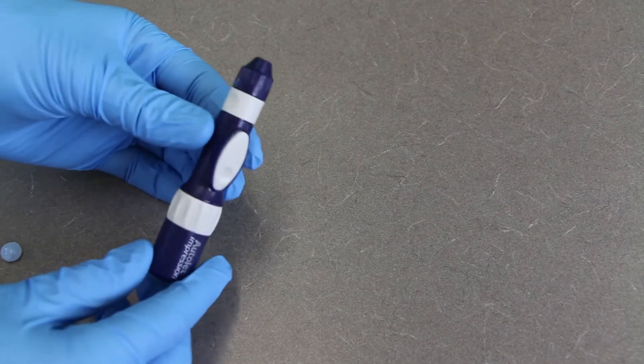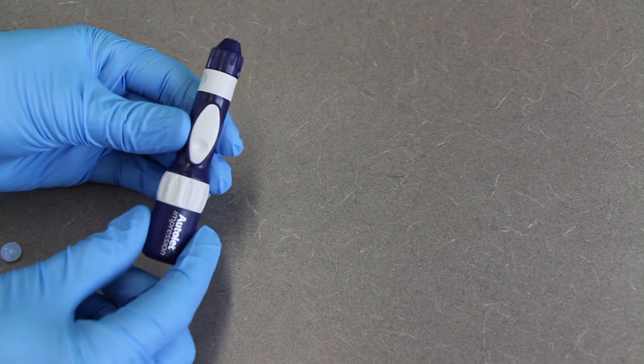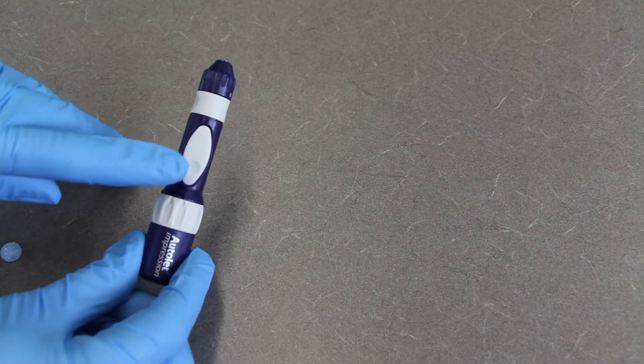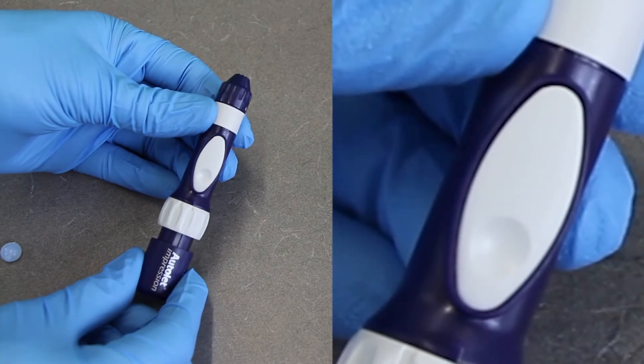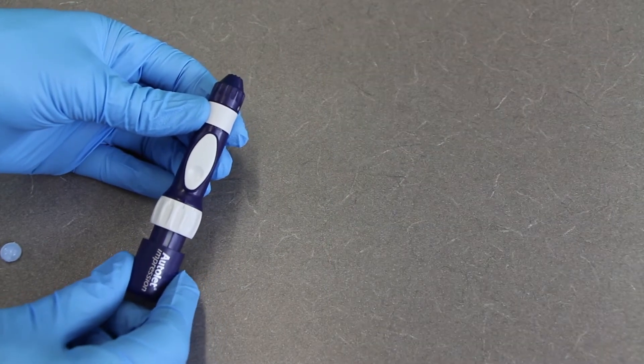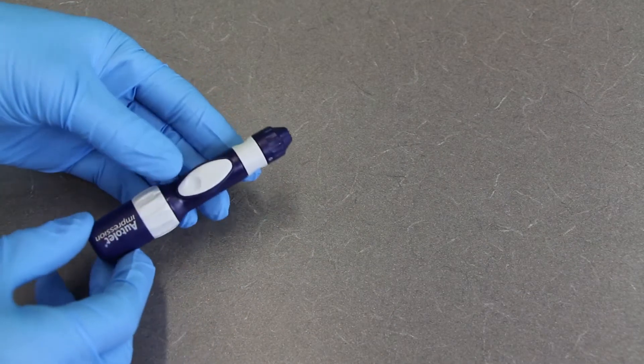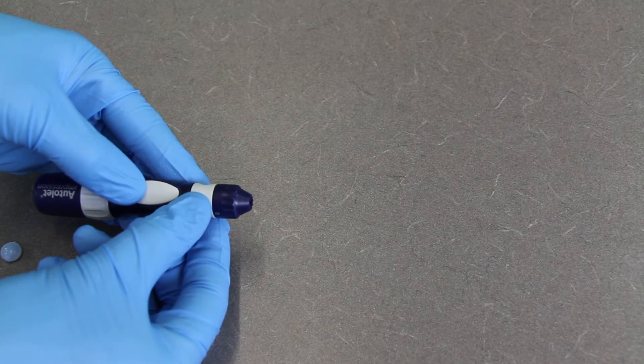In order to load the gun or to ready it, you're just for this version at least just going to grab this back part and pull back until you see this button here kind of pop out towards you. There it was. And then I can let go of the back and now it's ready to go. So now all I have to do is push on this button and you're not going to see it. There's a little tiny needle that's going to pop out the end of that.